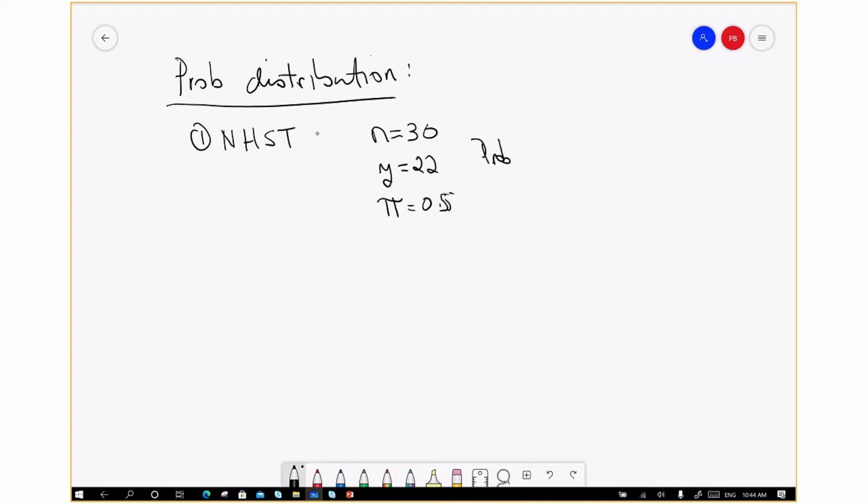The probability we got, our p-value, was 0.00261, and so we rejected the null hypothesis that pi was 0.5 in favor of the idea that there were more females than males in that department. That's one thing we can do with probability distributions.